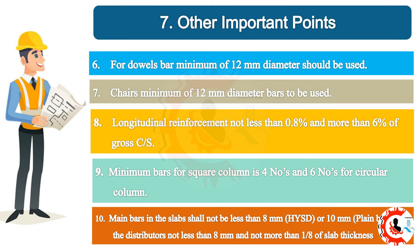6. For dowel bars, a minimum of 12 mm diameter should be used. 7. Chairs: minimum 12 mm diameter bars to be used. 8. Longitudinal reinforcement not less than 0.8% and not more than 6% of gross sectional area. 9. Minimum bars for square column is 4 bars, and 6 bars for circular column. 10. Main bars in the slab shall not be less than 8 mm (HYSD steel) or 10 mm (plain bars), and distributors not less than 8 mm and not more than 1 per 8 times slab thickness.